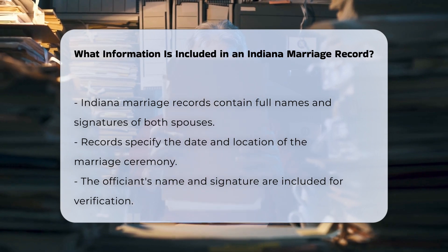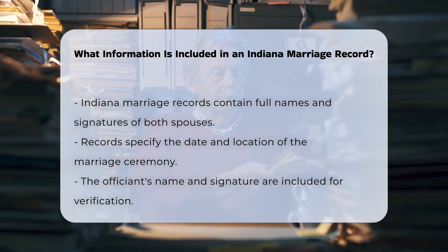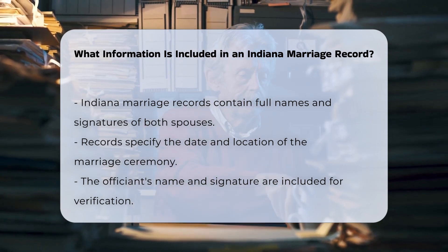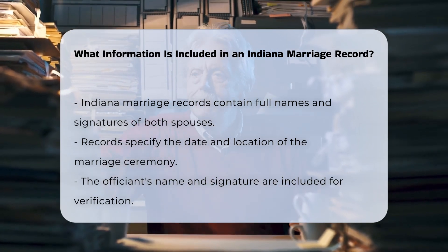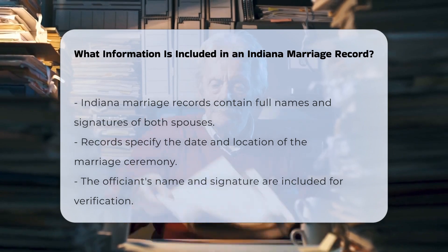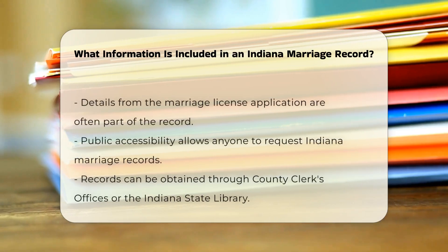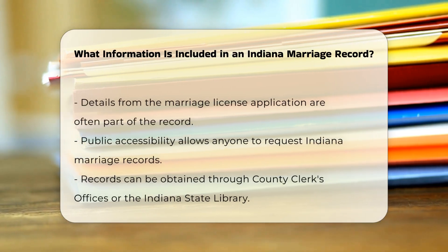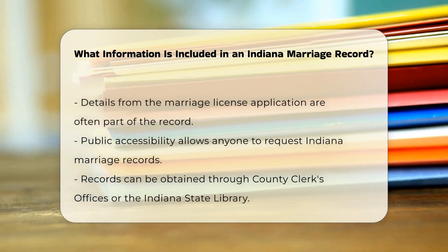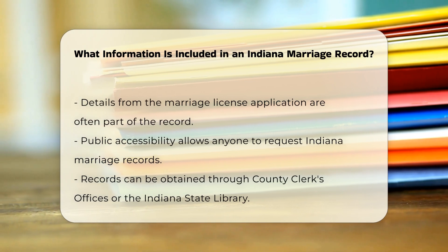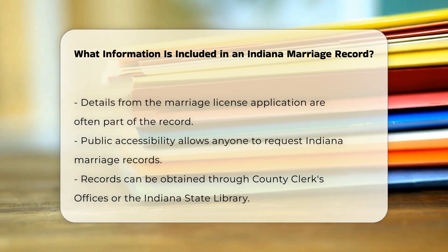Date and location of the marriage. The record will specify the date when the marriage took place and the location where the marriage ceremony was held. This could be a church, a courthouse, or any other approved venue.